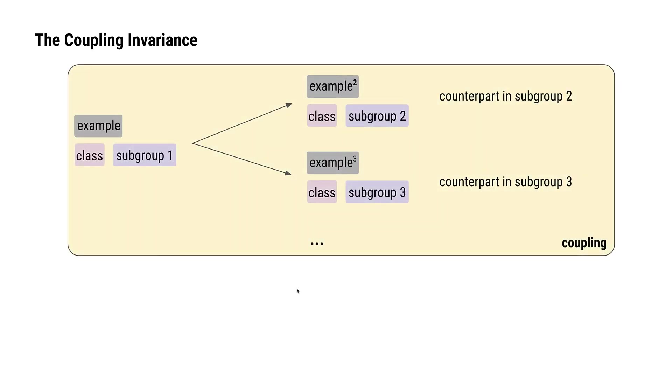We call this set of examples containing the original and its imagined counterparts a coupling. Concretely, we could take a no cancer image containing a bandage and ask what its counterpart in the no bandages subgroup would be.